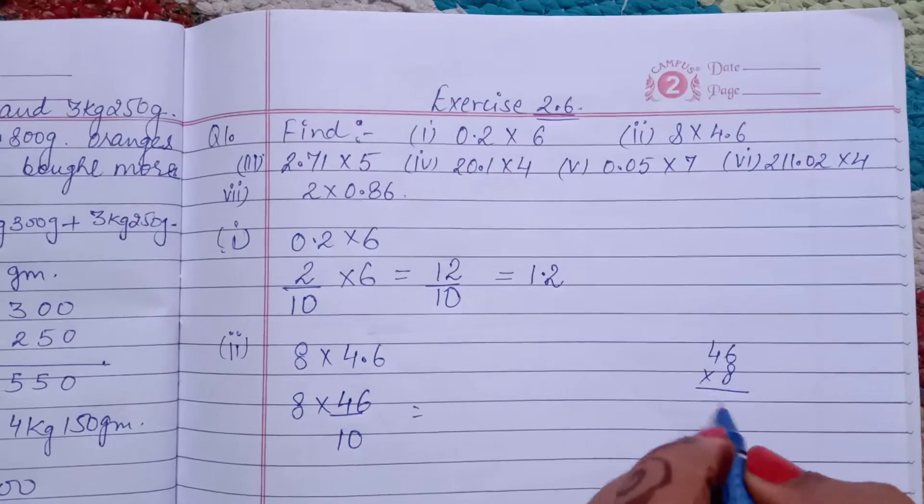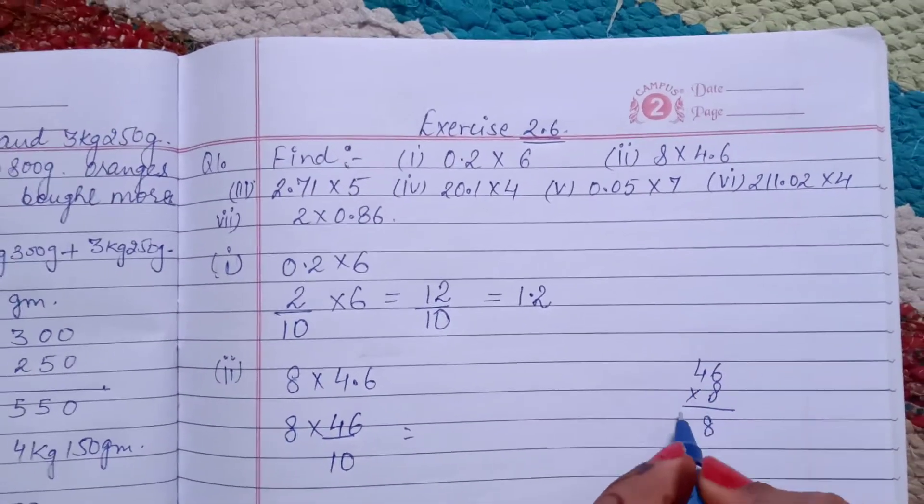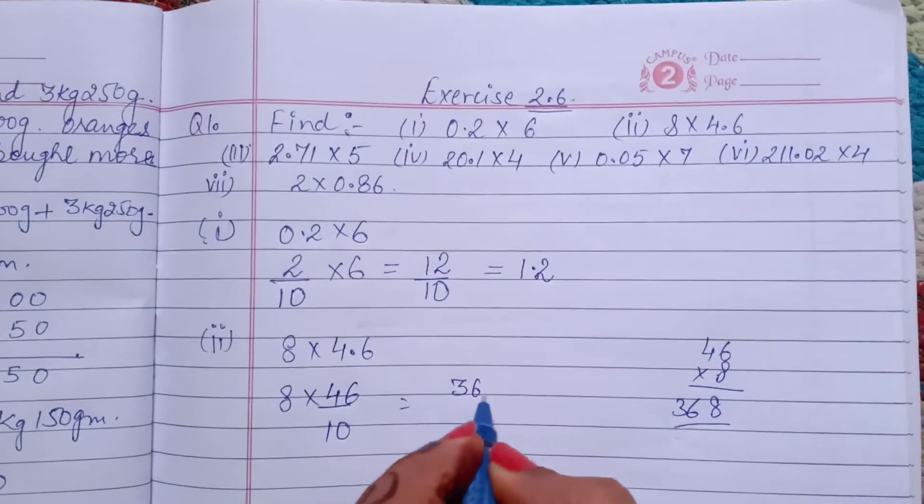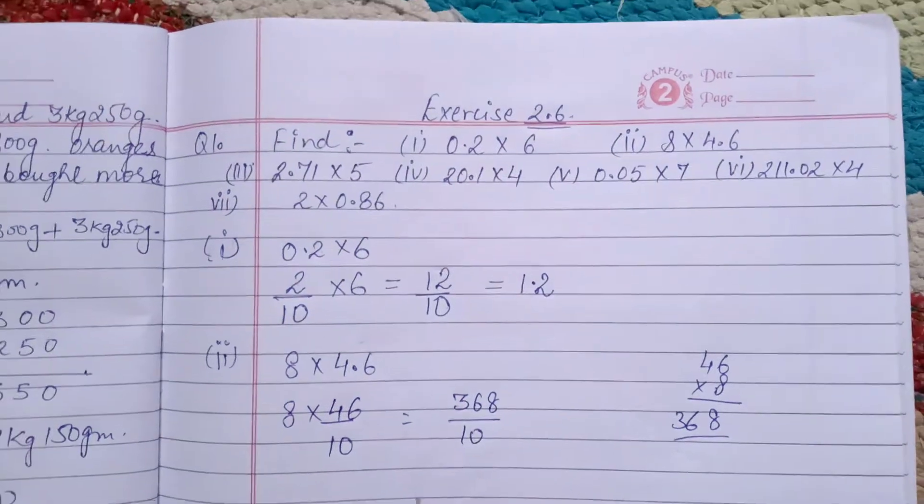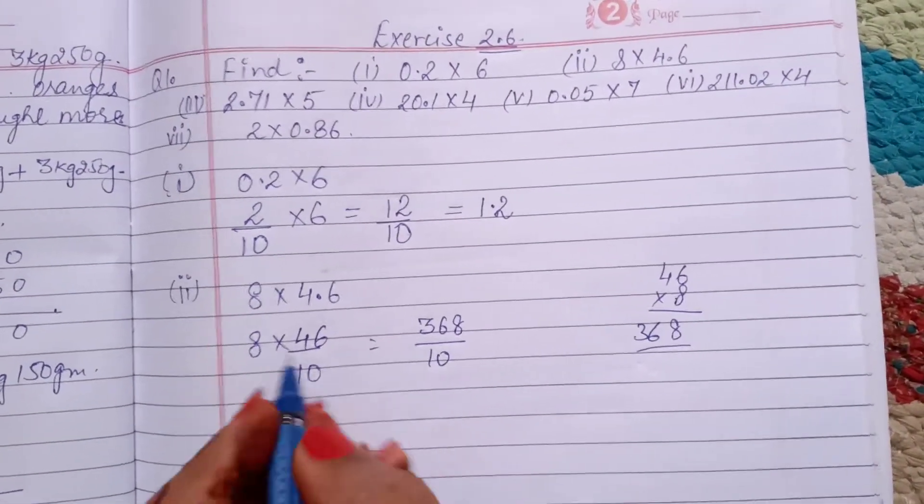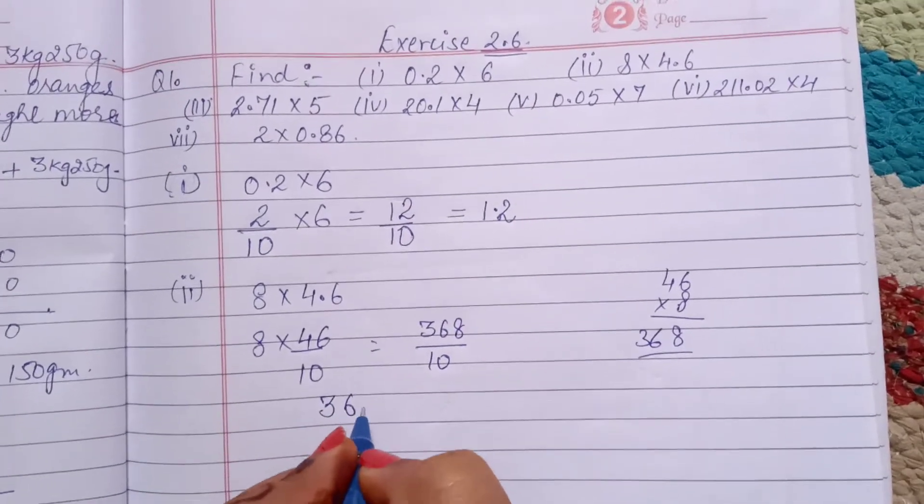Then 46 multiply by 8, then we get 6 in the 48, then 32 plus 4, 36, 368 over 10. Next same as remove over and convert into decimal form. After one digit, we put decimal. This is the second part.